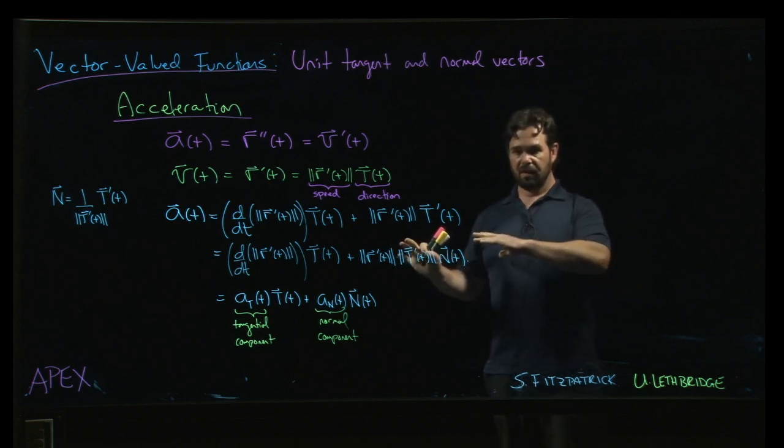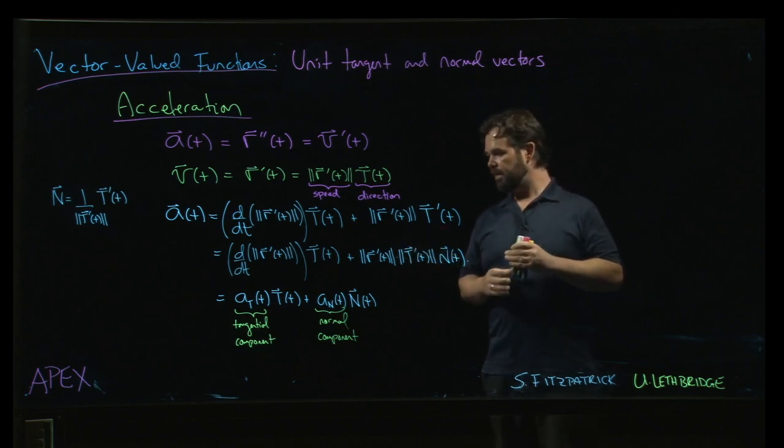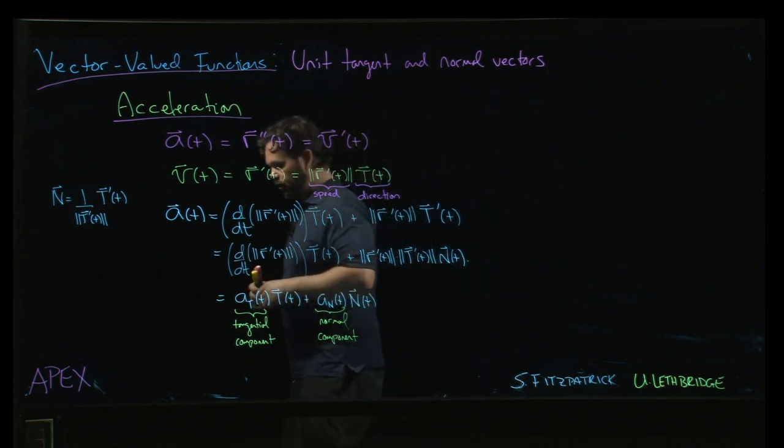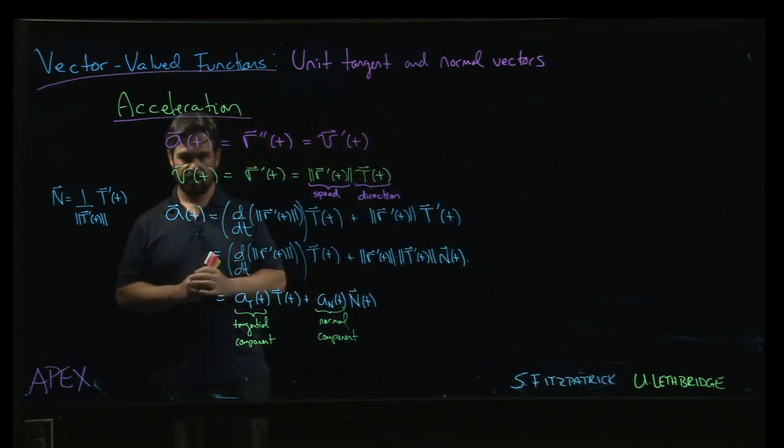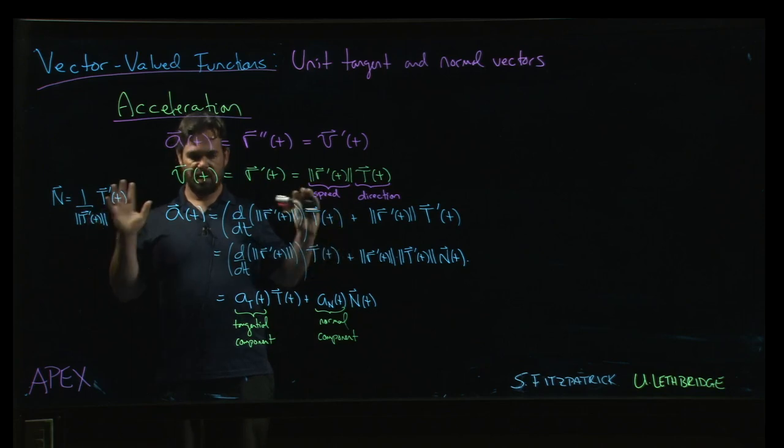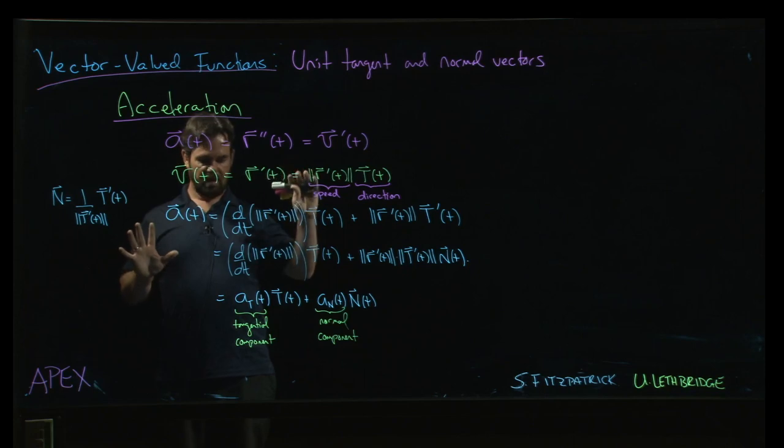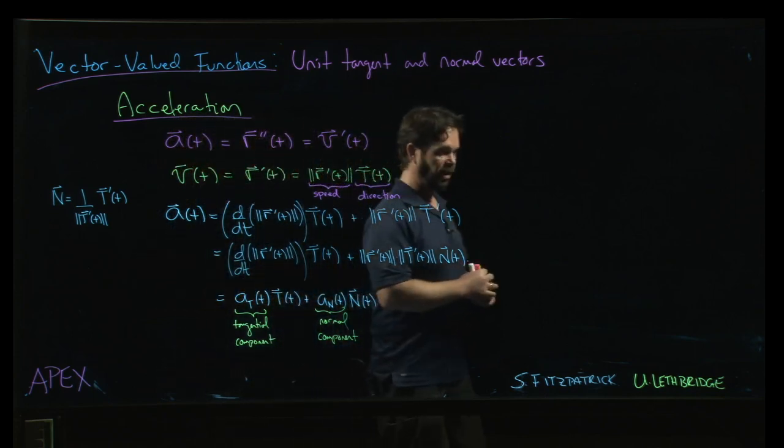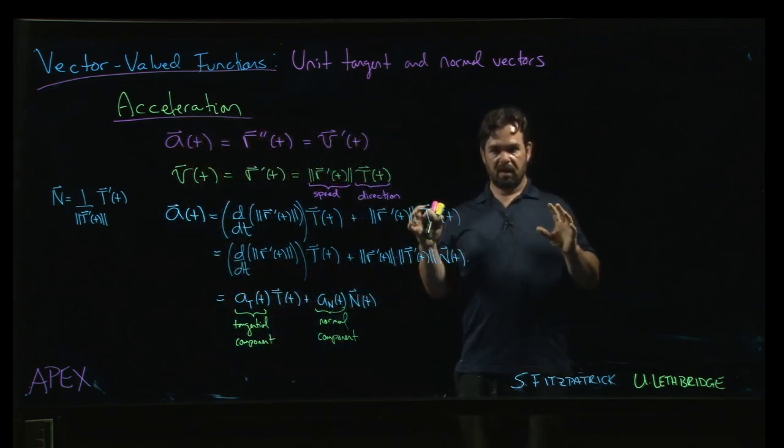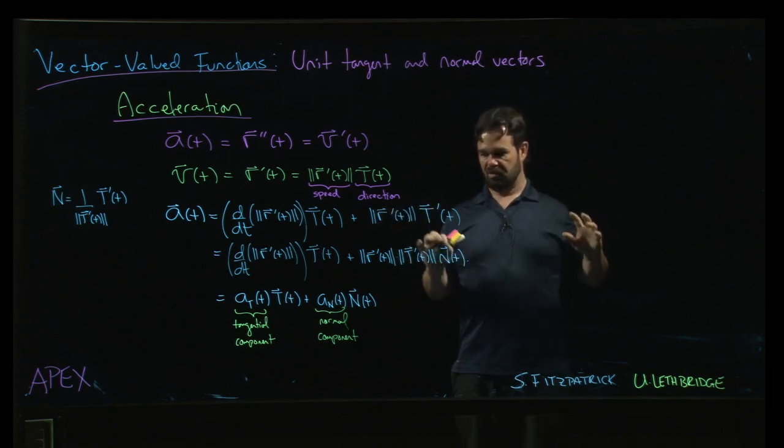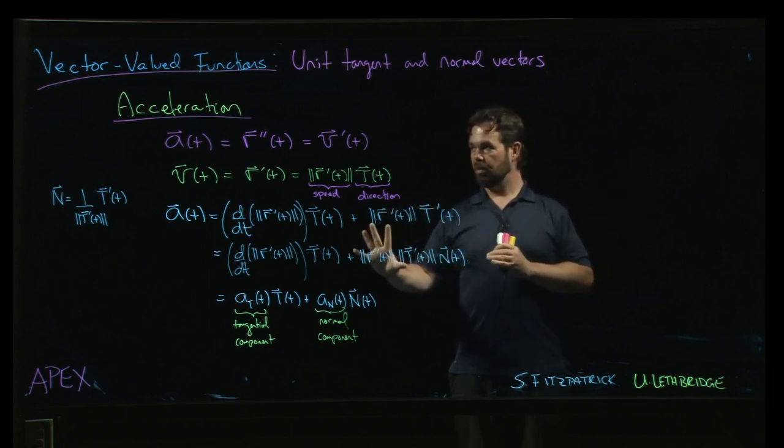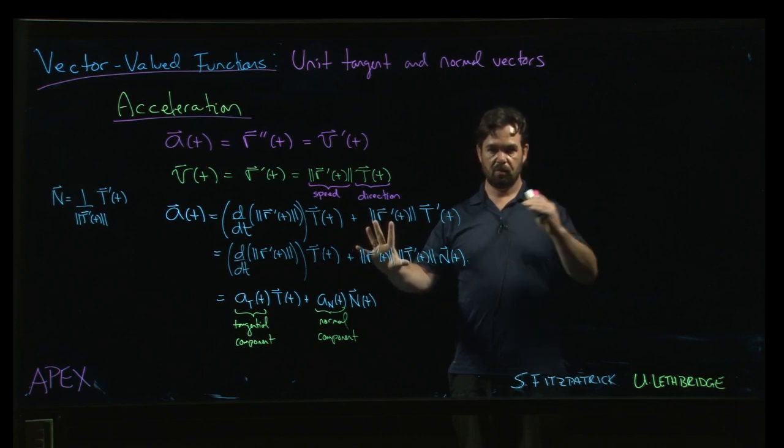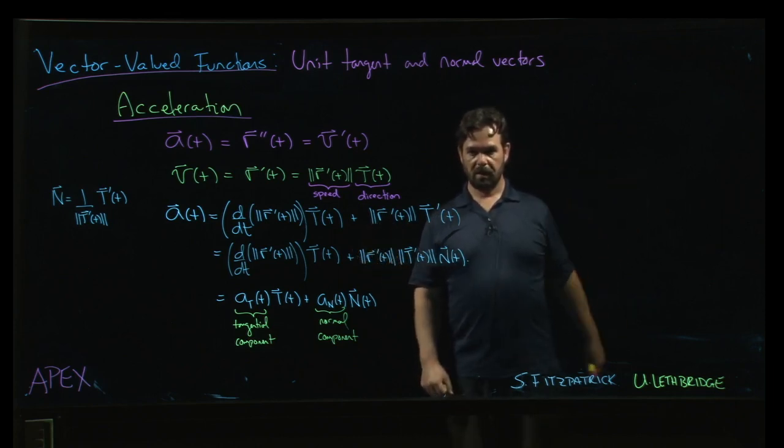So this turns out to be a useful fact. It comes up in a lot of situations, in particular if you're looking at things like planetary motion, things like that. There are applications there. A lot of stuff involving like circular motion. This is often a very useful observation to make about the acceleration when you're studying kinematics in higher dimensions. So we'll explore this a little bit further in the next couple of videos. We'll do some examples and then move on to the last topic in this chapter.